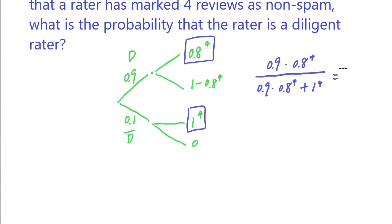Which is equal to 0.27, so around 27%. To reinforce this concept again, before knowing anything about this person, the probability that this person is a diligent rater is at 90%. After the observation that this person has marked 4 non-spam reviews, we reduce it to 27%. So this is known as the prior and this is known as the posterior probability after conditioning on the observation.